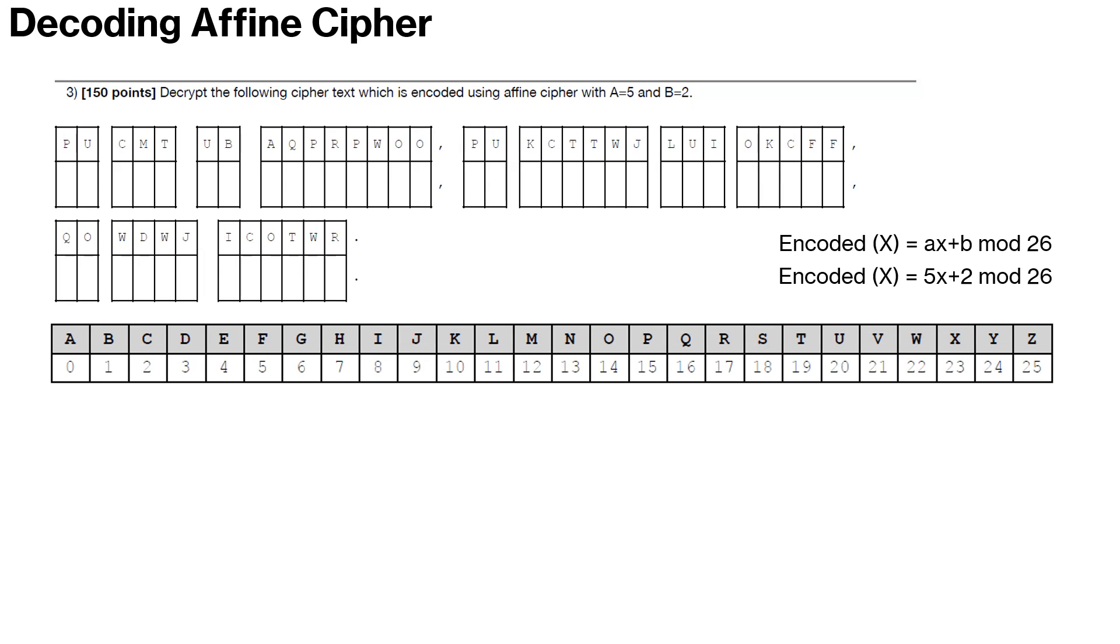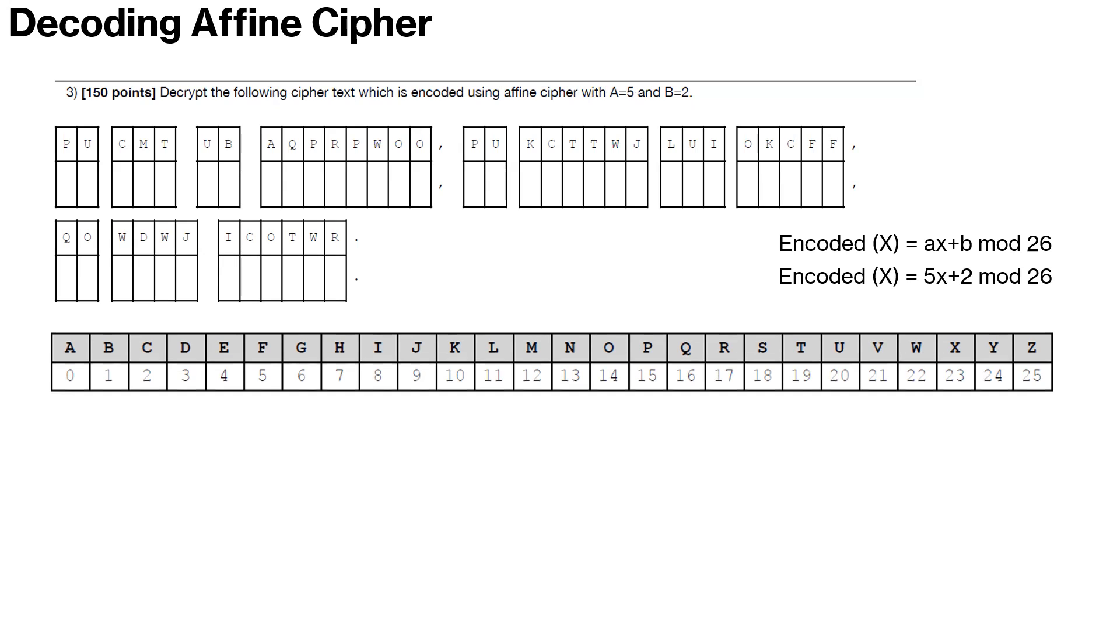Now there are two main strategies for encoding an affine cipher. One is you start finding the encoding for high frequency letters, and then start substituting those alphabets in the cipher text and try to figure out which words are forming or try to find the encoding for other letters as you go along.